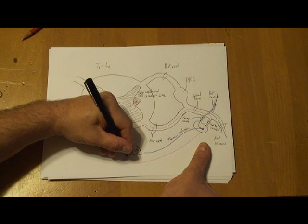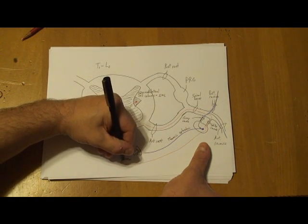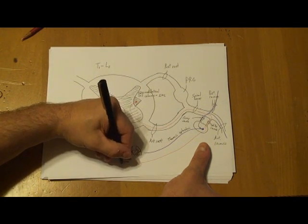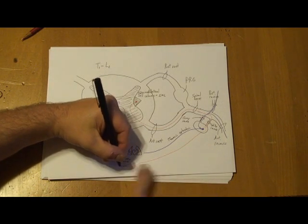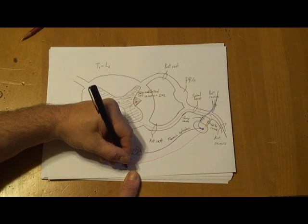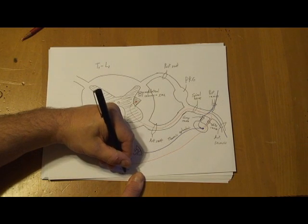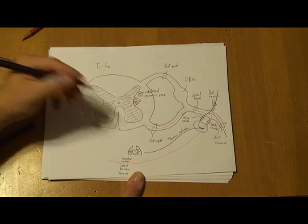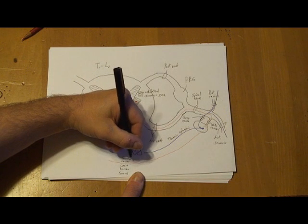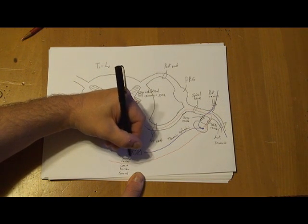The greater, lesser, least, lumbar, and sacral splanchnic nerves. And that's named for where they come out of the perivertebral ganglia.